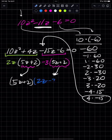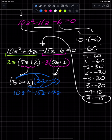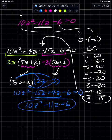I can check: 2 times 5 is 10z squared, negative 3 times 5 is negative 15z, 2 times 2z is plus 4z, and 2 times negative 3 is negative 6. Then of course these add up to be negative 11z and we get that.